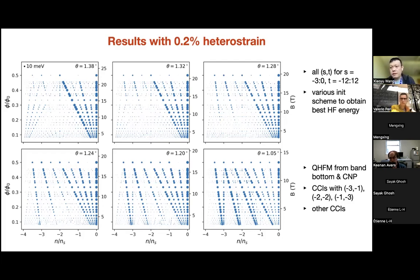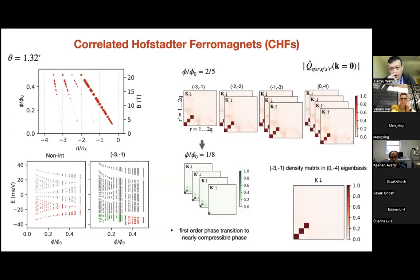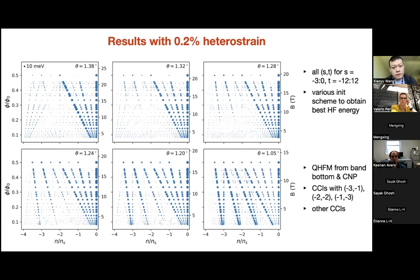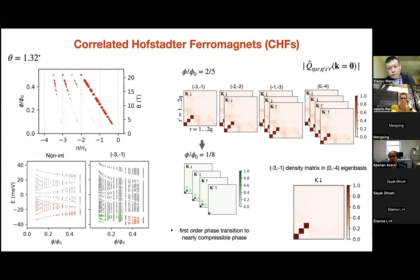At 1.05 degrees, I also observe additional correlated insulating states — for instance one with zero slope at the minus-three, zero vertical line, and also one at minus two with Chern number minus one rather than minus two. Additionally, there are smaller gap states in between filling fraction zero and minus one that seem to extrapolate to a fractional filling. There are also stripe states that break translation symmetry.